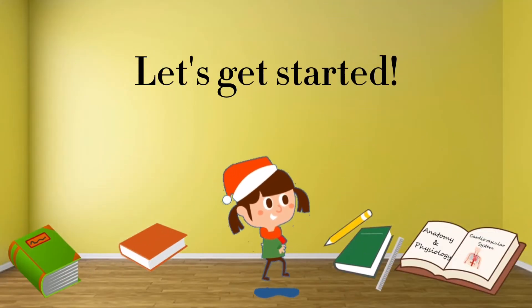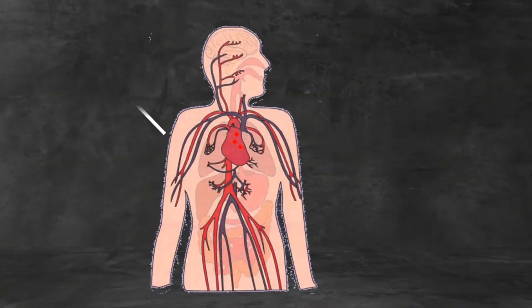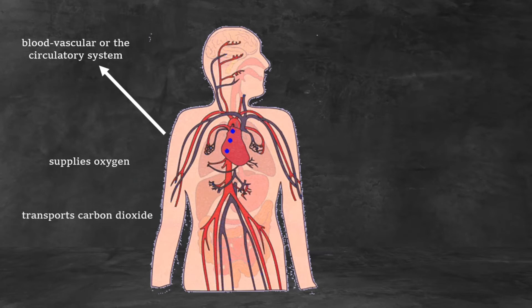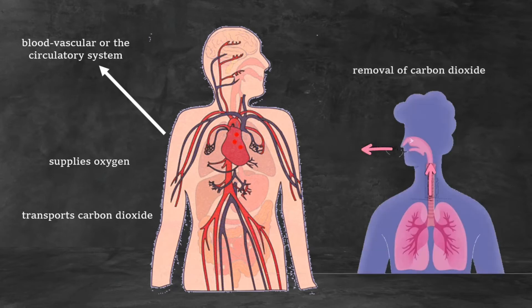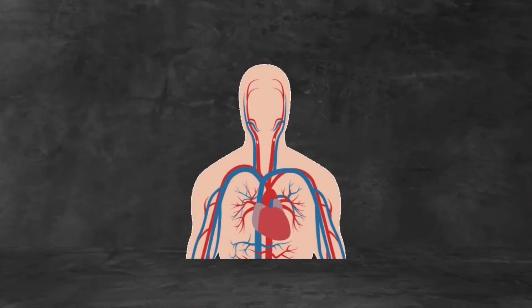Let's get started! The cardiovascular system is called the blood vascular or the circulatory system. It supplies oxygen from the lungs to the tissues around the body. It also transports carbon dioxide, a waste product, from the body to the lungs. Breathing out then removes carbon dioxide from the body.